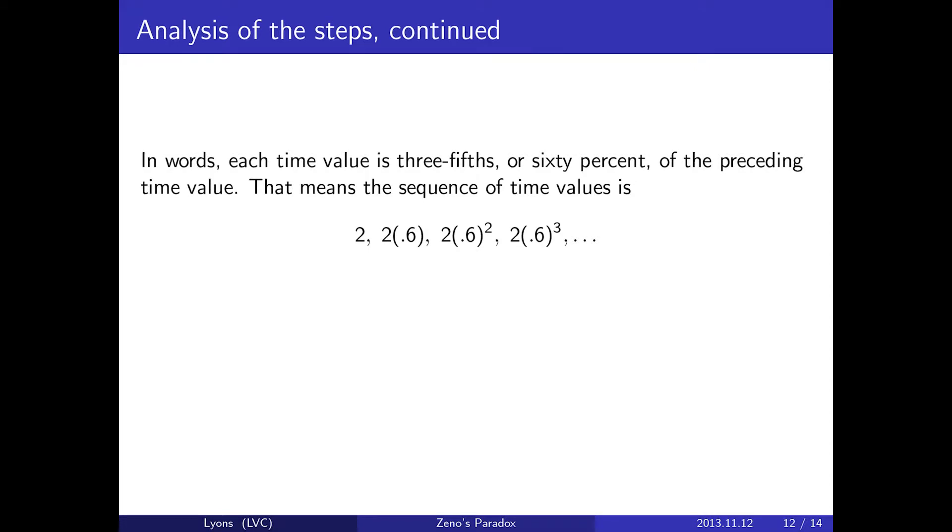In words, each time value is 3 fifths or 60%, that's 0.6, of the preceding time value. That means the sequence of time values is, starting with the first, 2 and then 60% of 2, and then 60% of 60% of 2, and then 60% of 60% of 60% of 2. So that it looks like this list of numbers.